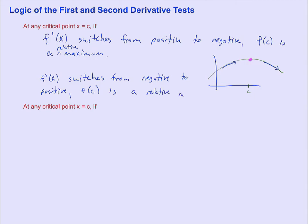This is what we call the first derivative test. We've done things like this. We've spoken about this before, how when the derivative switches from positive to negative that means a function switches from increasing to decreasing.